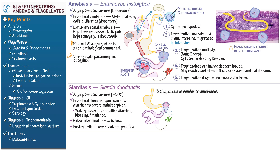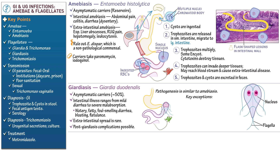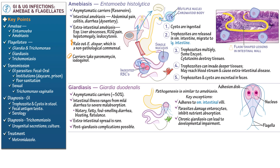Indicate that Giardiasis pathogenesis is similar to amoebiasis, but we'll highlight some key exceptions. Draw a simplified Giardia duodenalis trophozoite, showing its pear-shaped body with flagella. Indicate the two nuclei and the surrounding large adhesive disc, also referred to as the ventral disc. Write that this disc facilitates firm adhesion to the villi of the small intestine. Then write that the parasites damage the enterocytes, leading to diarrhea and inhibition of nutrient absorption. Again, because the parasites are rarely invasive, Giardiasis is not typically associated with bloody stools. However, write that chronic Giardiasis can lead to developmental impairment, a major concern in developing countries where the effects of Giardiasis exacerbate existing malnutrition.